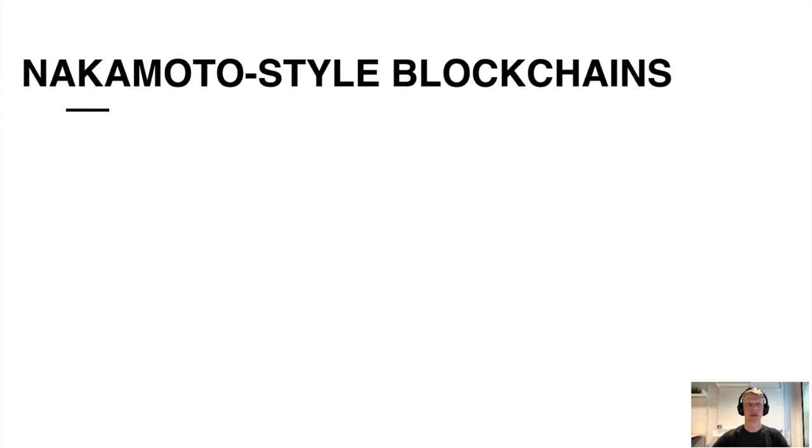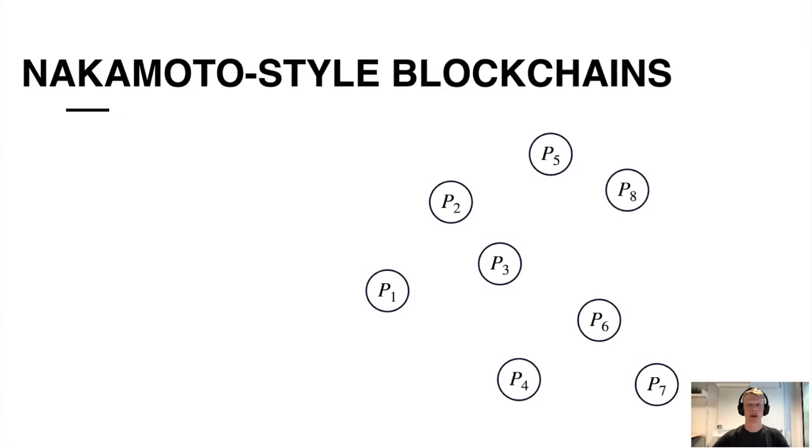I'd like to motivate this work using the example of Nakamoto-style blockchains. This is a type of protocol where a group of parties, which you see on the right, participate in a lottery, which you see on the left, in order to be allowed to extend the current base chain with a new block.